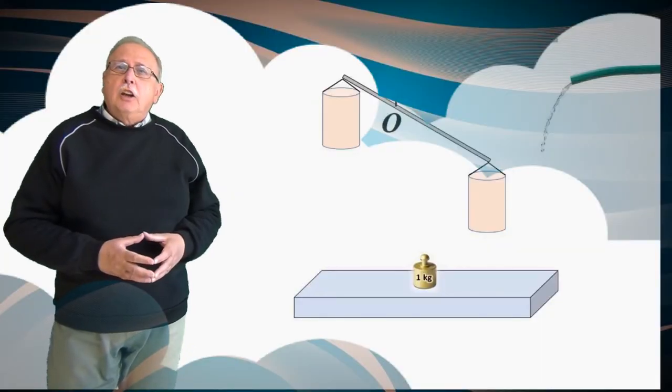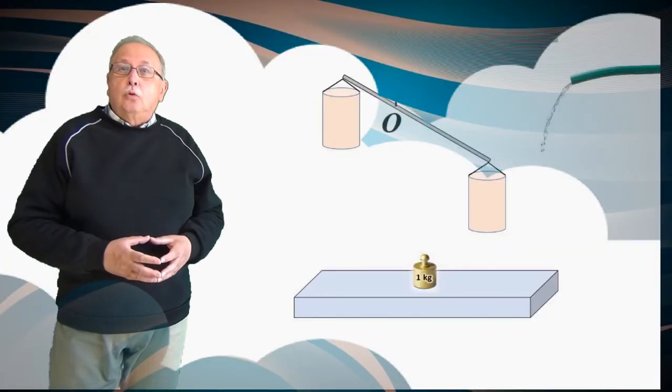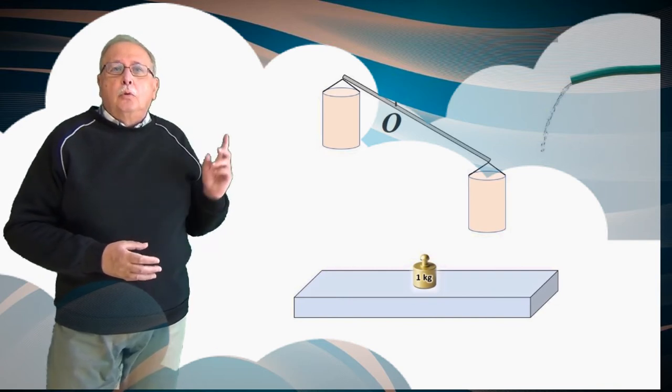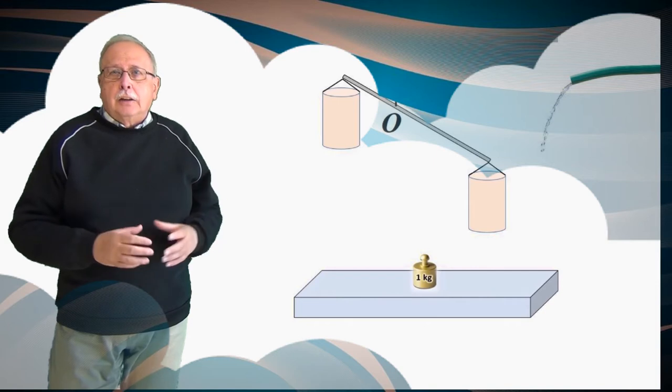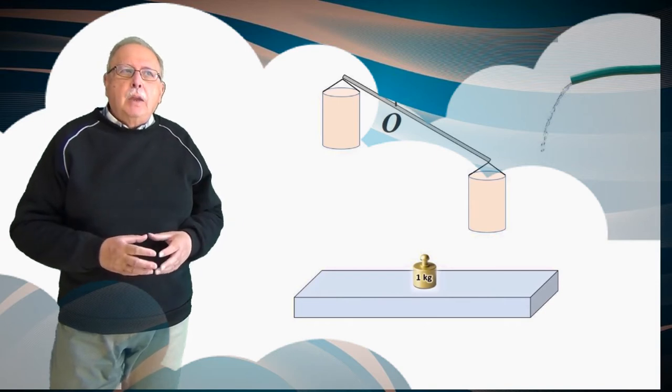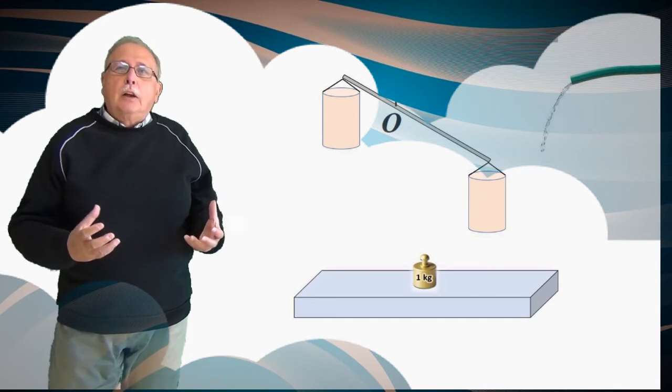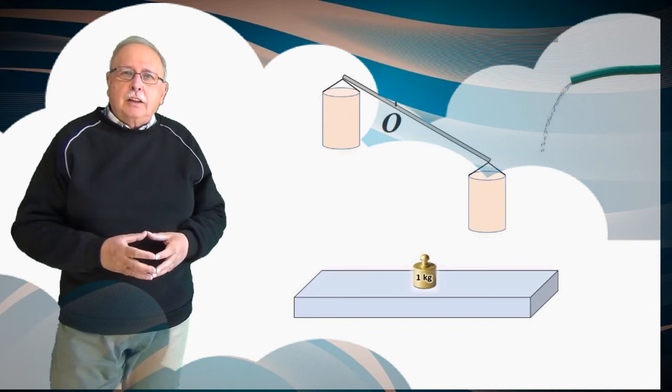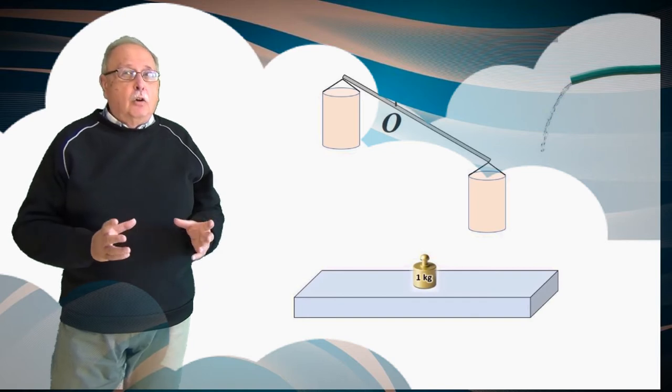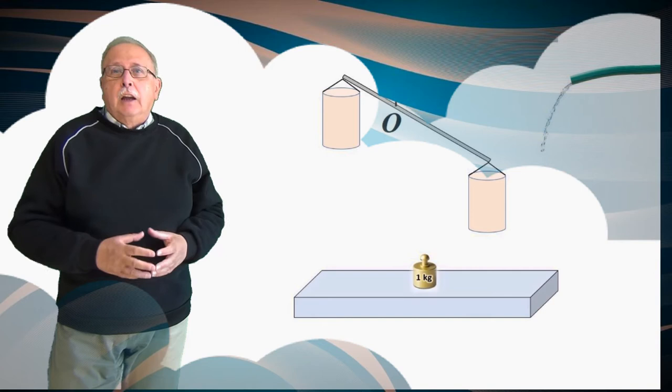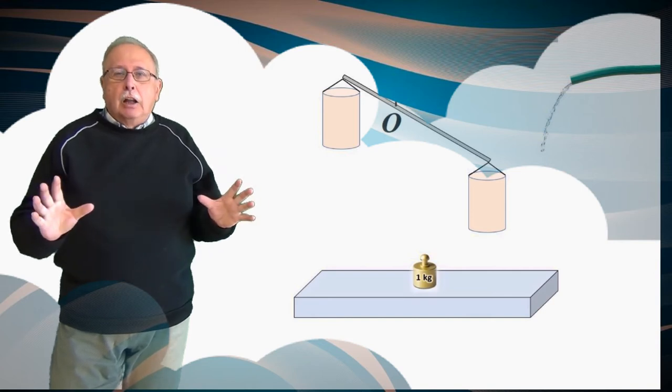Să ne amintim. Avem, așa cum vedeți în imagine, o balanță cu brațe inegale. Pârghia este prinsă în punctul O și are greutatea neglijabilă, iar în locul talerelor avem două flacoane ușoare de plastic. Mai avem o masă marcată de un kilogram, una singură, și un furtun prin care vine apă. Nimic altceva.